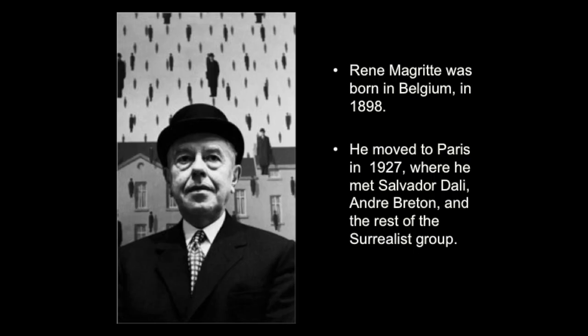Rene Magritte was born in Belgium in 1898 — that's a really long time ago. He moved to Paris, which is in France, in 1927. This is where he met Salvador Dalí and André Breton and the rest of the Surrealist group. Surrealist is a pretty big word — it comes from the word Surrealism. I have a little video clip to explain that to you.